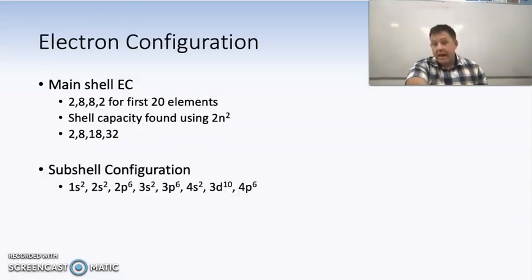We then went on and had a look at electron configuration. How are the electrons arranged in those shells around the nucleus? We had a look at main shell electron configuration, which was, for the first 20 elements, that 2,8,8,2. Or if you're looking at it generally, it's 2,8,18,32. So for instance, if something had 13 electrons, it would have an electron configuration of 2,8,3. We're filling from that inner shell out.